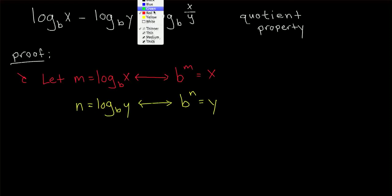Okay, now what I'm going to do is take x over y, which gives us b to the m over b to the n, right? Because x was b to the m and y was b to the n.